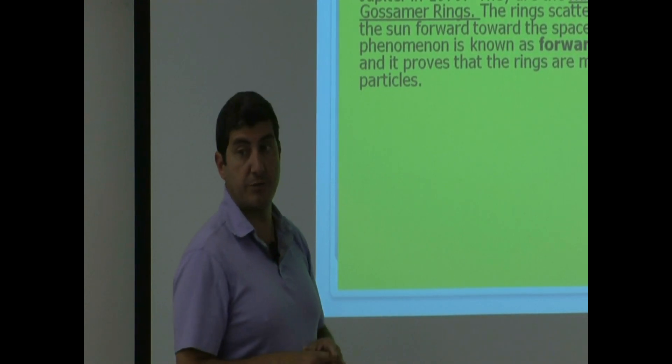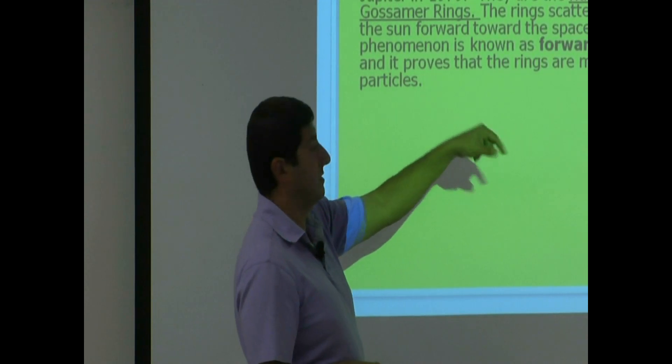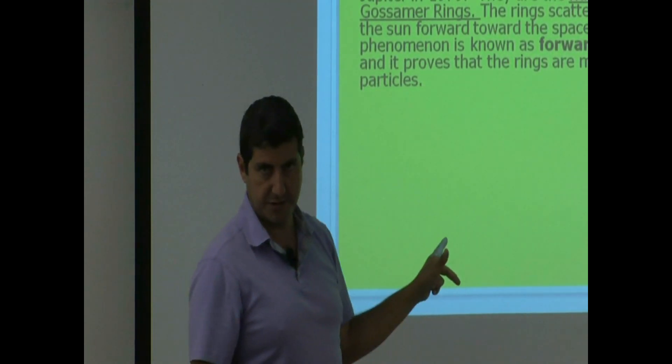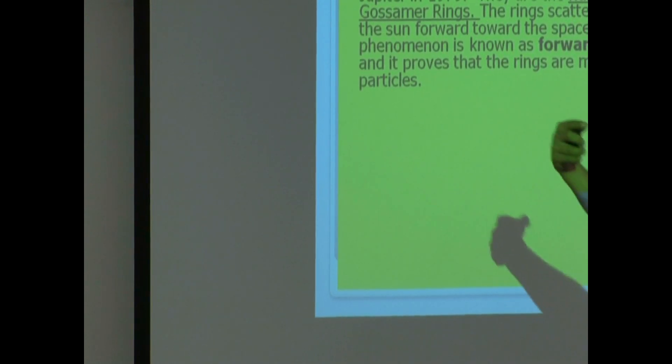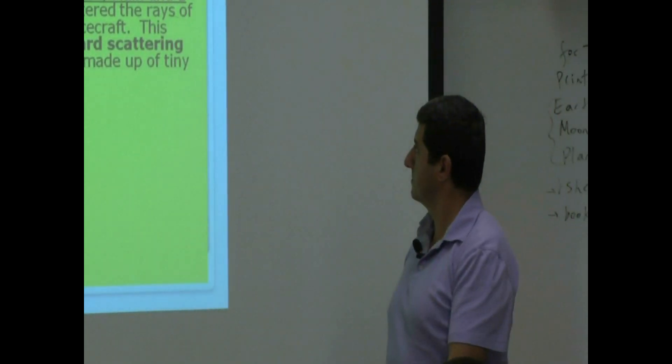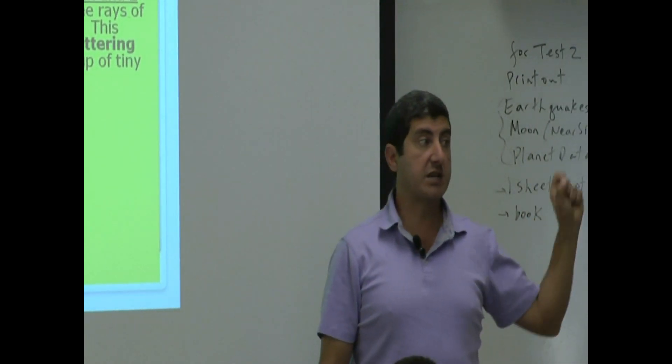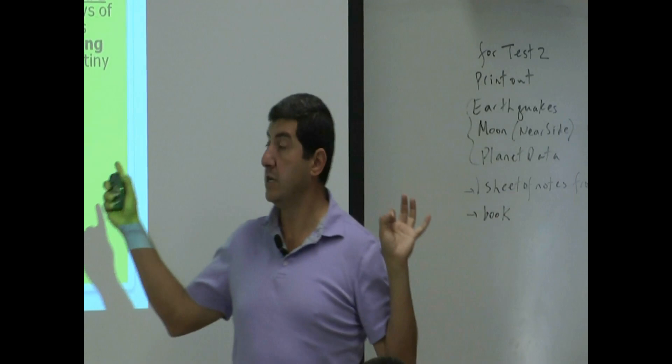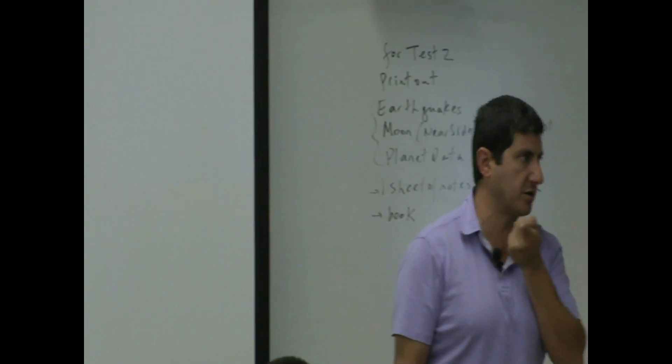What does forward scattering prove? It proves that the rings are made up of tiny particles, not big particles. You see? The sunlight comes and it scatters forward. So this proved that the rings of Jupiter are unlike the rings of Saturn. The rings of Jupiter are made of small particles, not big.